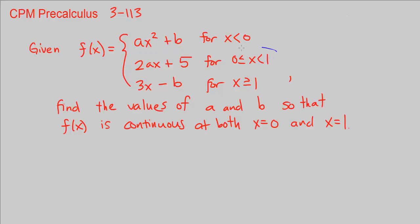2ax plus 5 for 0 is less than or equal to x is less than or equal to 1. So we're having that function just between 0 and 1 here, just between these two values.